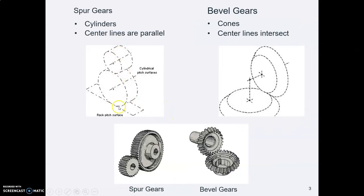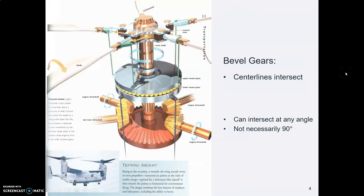So spur gears are made of cylinders and their center lines are parallel. Bevel gears are made of cones and their center lines intersect, and they can intersect at any angle.